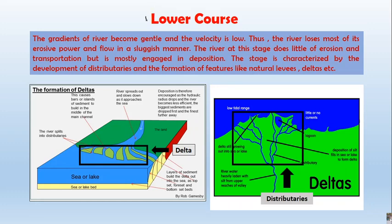In the lower course, the slope of the land becomes very gentle and the velocity gets very low. The river loses most of its erosive power and flows in a sluggish manner. The river does little erosion or transportation and is mostly engaged in deposition. This stage is characterized by the development of distributaries and formation of features like natural levees and a delta.